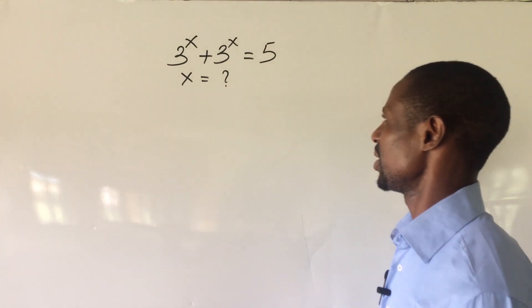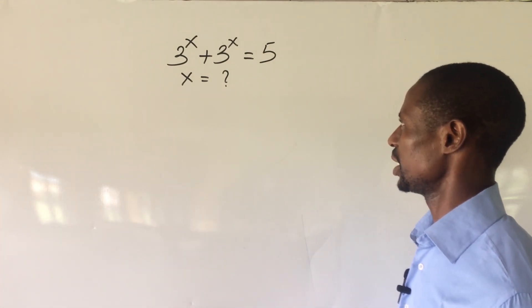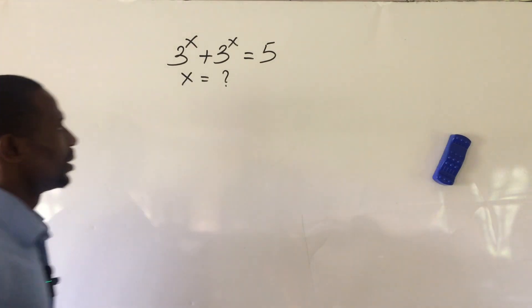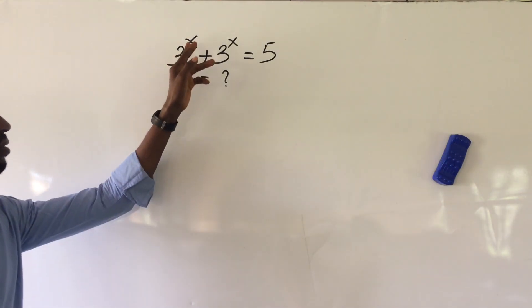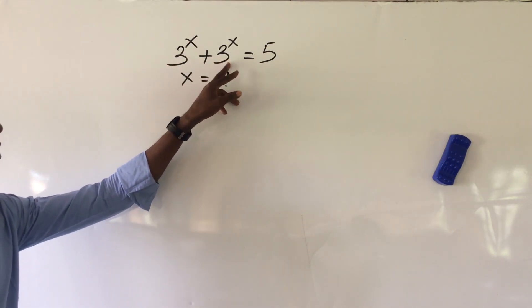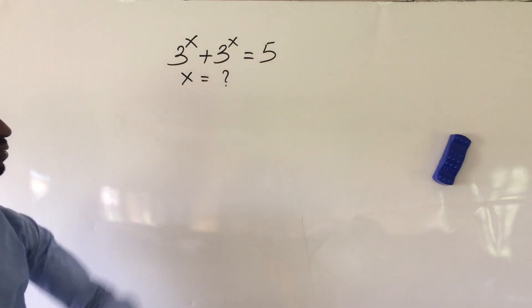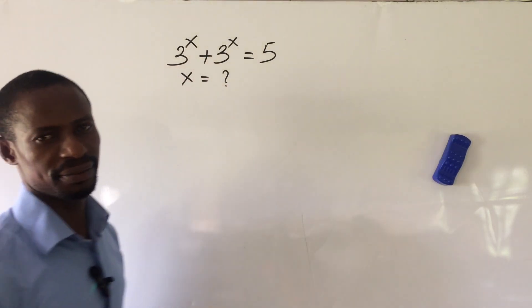Welcome again. Today we have an exponential challenge. The question is 3 to the power of x plus 3 to the power of x equals 5. What would be the value of x?